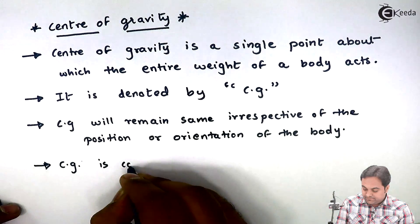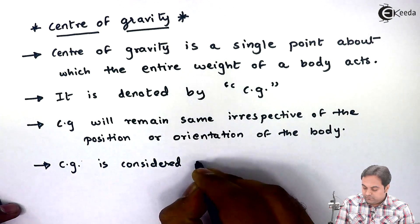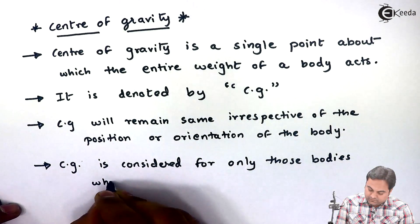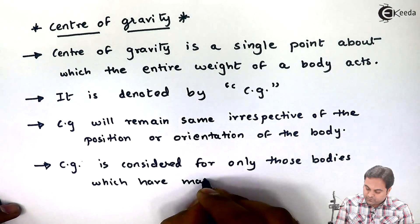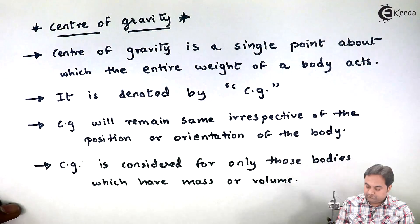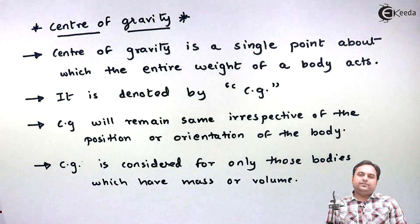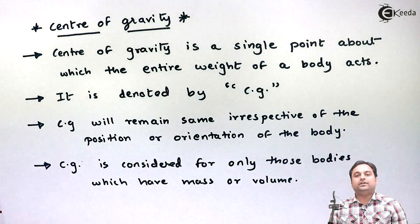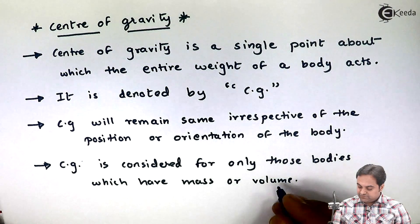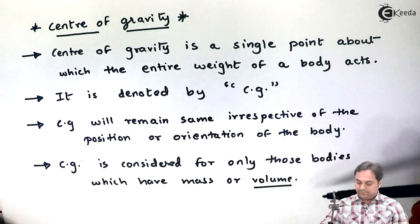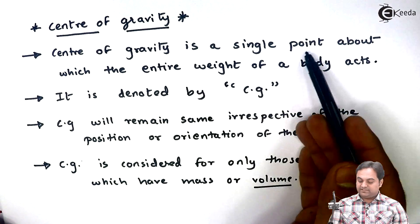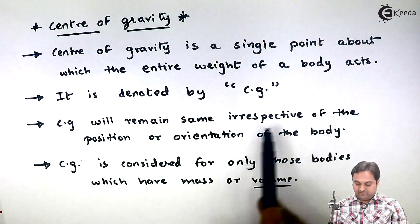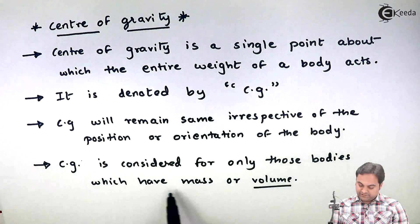CG is considered for only those bodies which have mass or volume. In other words, CG is to be considered only for 3D figures, because 3D figures will have volume. To summarize: center of gravity is a single point about which the entire weight of a body acts, denoted by CG, and it remains the same irrespective of the position or orientation of the body.